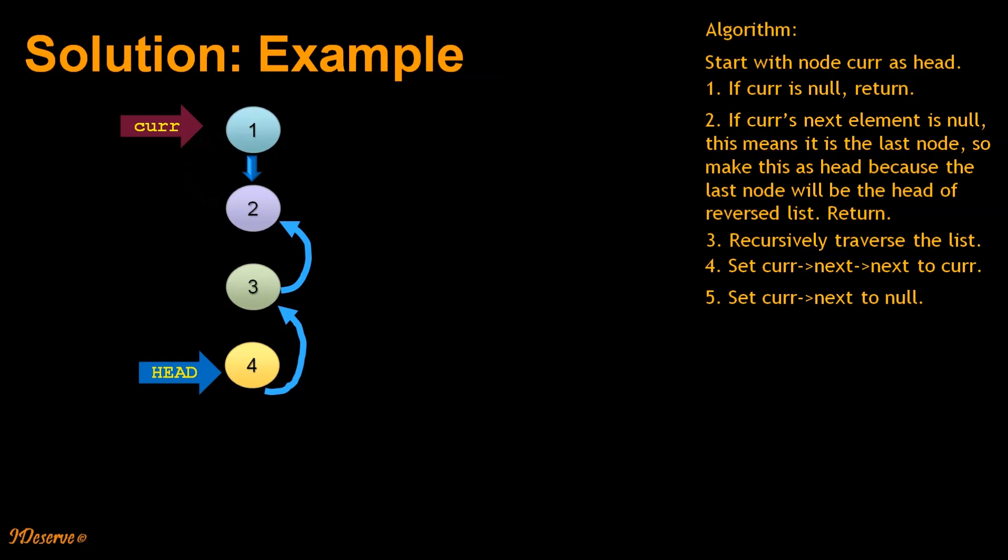Similar operation in the last call stack also. Set current.next.next to current, current.next to null, which is our reverse linked list.